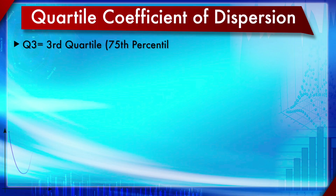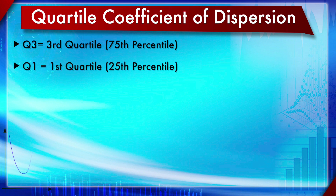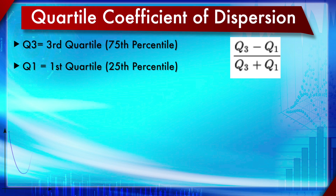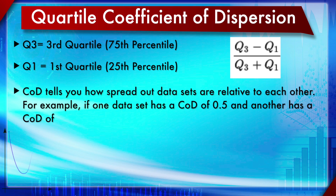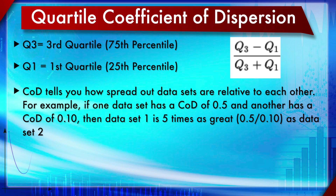One more measure of dispersion is the Quartile Coefficient of Dispersion, shown in red as it is a non-parametric method. It is calculated as Q3 minus Q1 divided by Q3 plus Q1, where Q3 is the third quartile (75th percentile) and Q1 is the first quartile (25th percentile). Unlike CD, this method makes no explicit assumptions about the probability distribution from which the sample came.